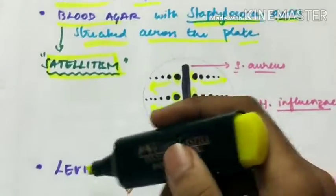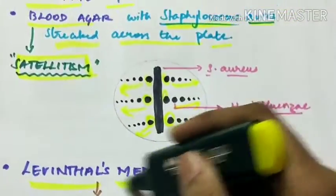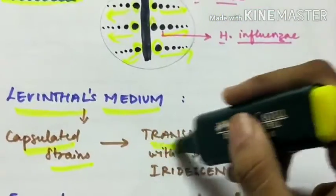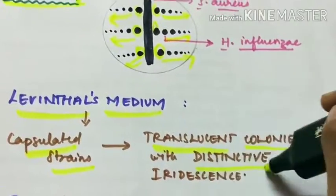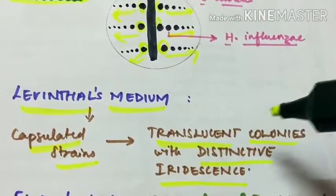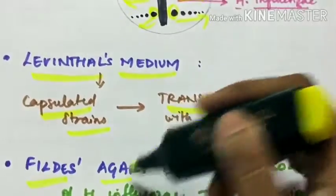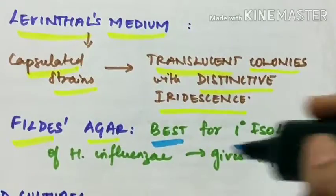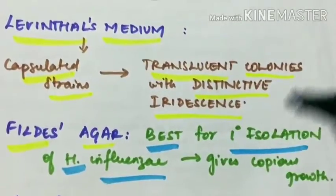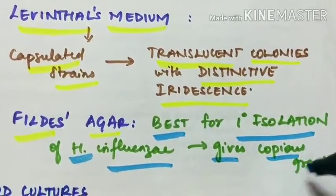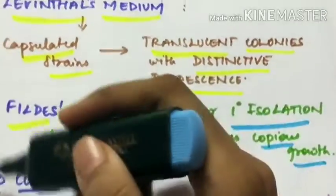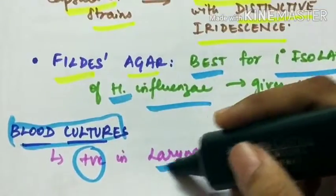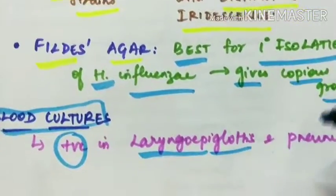Next, culture can also be performed on Leventhal's medium in which the capsulated strains produce translucent colonies with distinctive iridescence. In Phildes agar, it is best for primary isolation of Haemophilus influenzae which gives copious growth of the bacillus. Blood cultures are positive in case of Laryngoepiglottitis and Pneumonia.